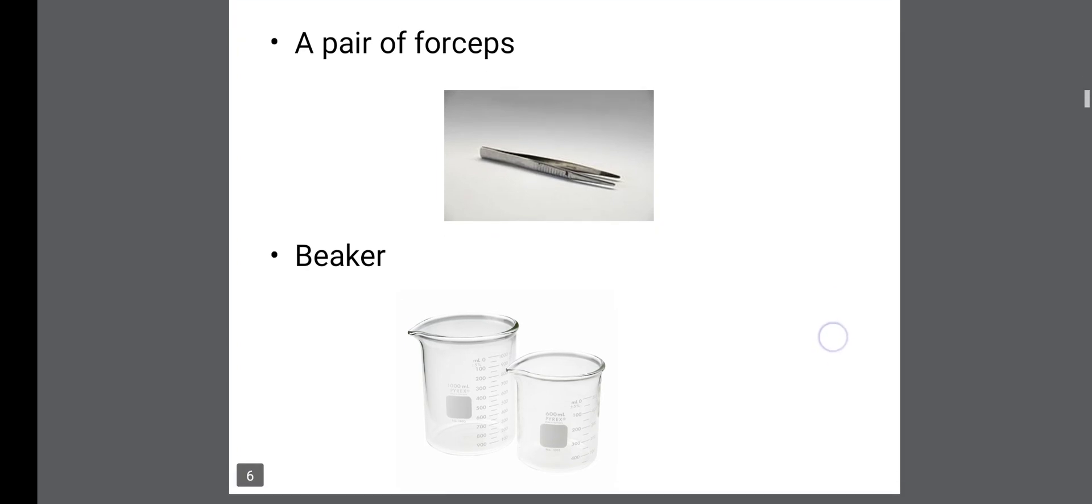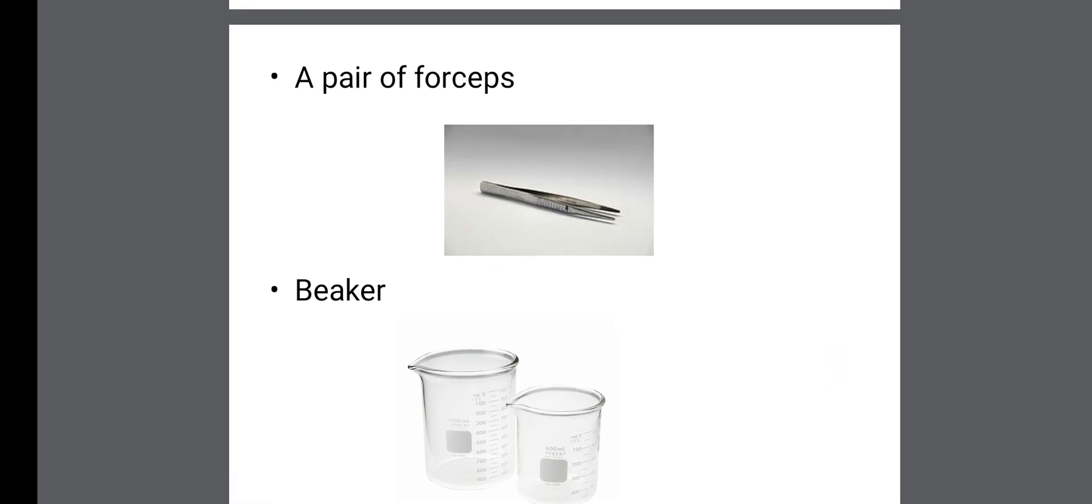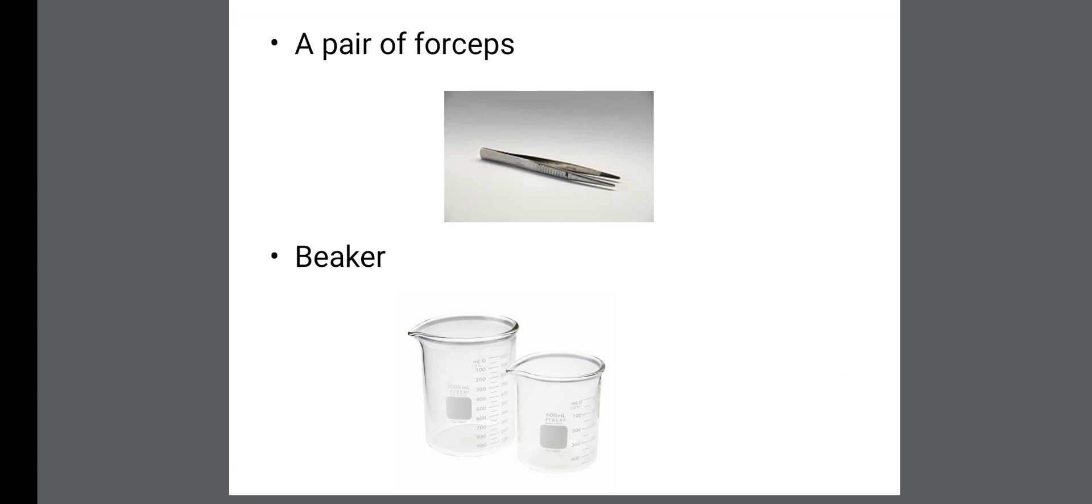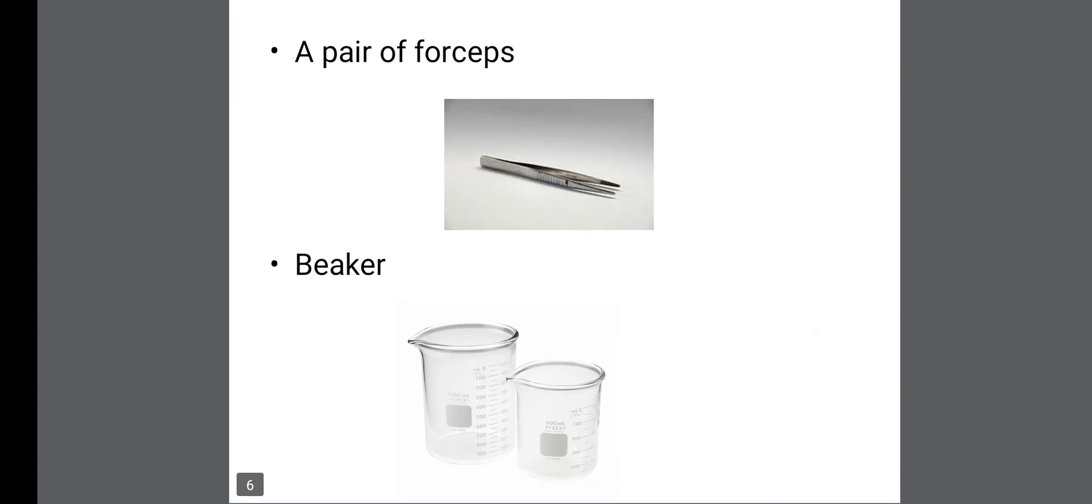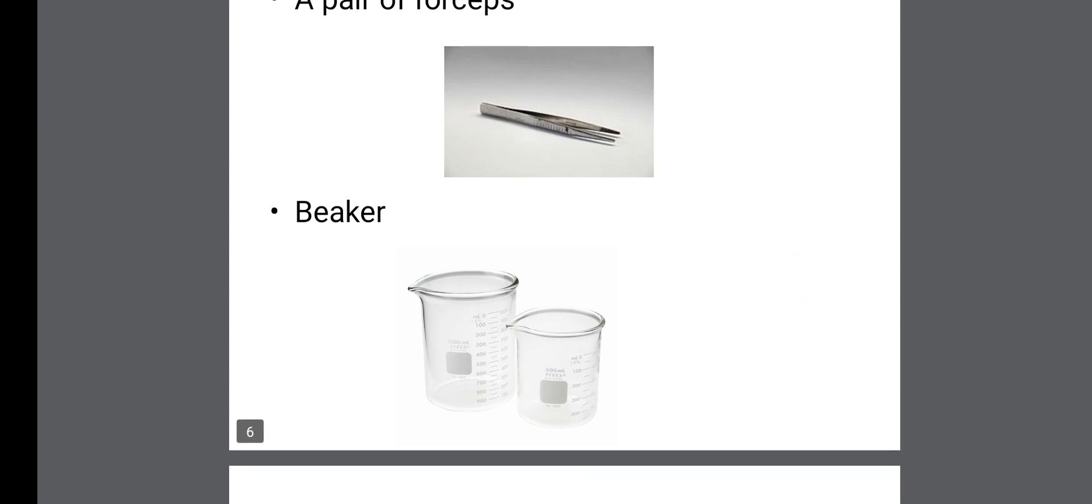When you pick the specimen, you can use the forcep to move the specimen to different directions based on what they ask of you. Because in some cases they might ask you to draw the dorsal view. They might ask for the ventral view. Some might even ask for the lateral view.